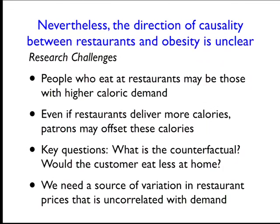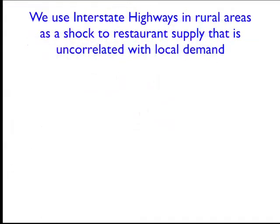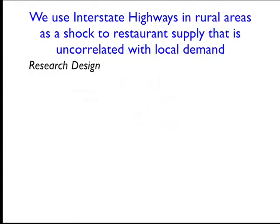Even if McDonald's is really cheap, if you had to drive 20 miles to go there, you probably would not — especially if the motivation for going is that it's fast. What we did in the study is use interstate highways in rural areas as essentially a shock or source of variation in restaurant supply that should be uncorrelated with local demand. You can think of it a bit like the Currie and Walker paper where EZPass was used as a source of variation in pollution. The reason restaurants locate near interstate highways is not to serve local customers, but rather to serve travelers who want to pull off the road.